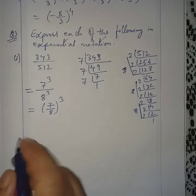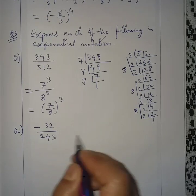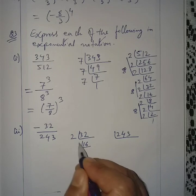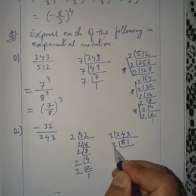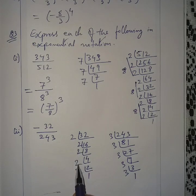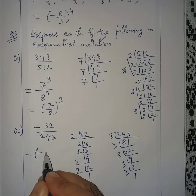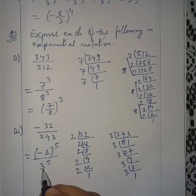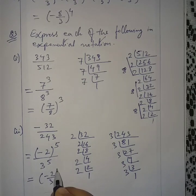Question number 2: Express −32/243 in exponential notation. Factorize: 32 = 2^5 (five 2s) and 243 = 3^5 (five 3s). Since both have the same power of 5, we write −32/243 as −(2/3)^5.